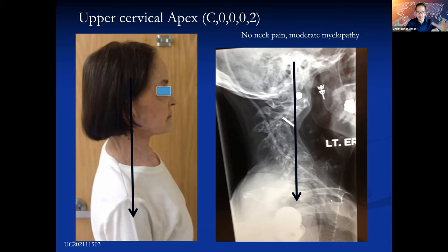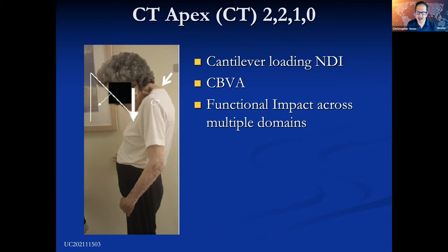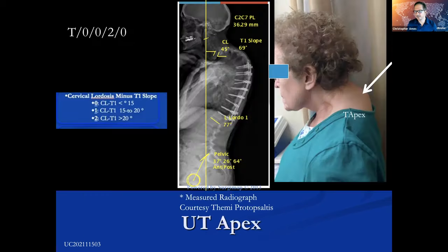Bringing it all together and back to the patient: low-grade cervical apex location deformities often don't manifest in the appearance domain, so we need to think more like deformity surgeons. There may be an impact in pain and myelopathy potentially, but not in appearance. What produces the classic chin on chest? That's usually a cervical thoracic apex, with impacts across all domains. And what produces the translated head with maintenance of chin-brow vertical angle? That's usually a T1 slope minus cervical lordosis abnormality.